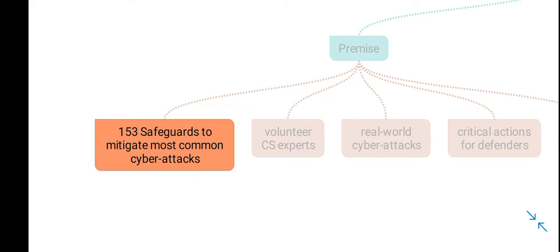These 153 safeguards are classified into implementation groups based upon their criticality. For example, implementation group 1 is most critical, and implementation group 3 is also critical but is for organizations with larger size and more resources. Implementation group 1 is called essential cyber hygiene and is applicable even to smaller organizations with fewer resources. Each of the 153 safeguards are further prioritized or classified into 3 implementation groups — IG1, IG2, and IG3 — based upon the complexity to implement each of these safeguards.